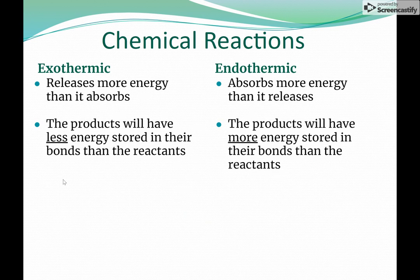There are two types of chemical reactions: exothermic reactions and endothermic reactions. Exothermic reactions - a good way to remember what those are is where the energy is exiting the reaction. It releases more energy than it absorbs, and the products will have less energy stored in their bonds than the reactants did. Endothermic - how I like to remember this one is that the energy is entering the reaction. You have an endothermic reaction where it absorbs more energy than it releases, and the products will have more energy stored in their bonds than the reactants.